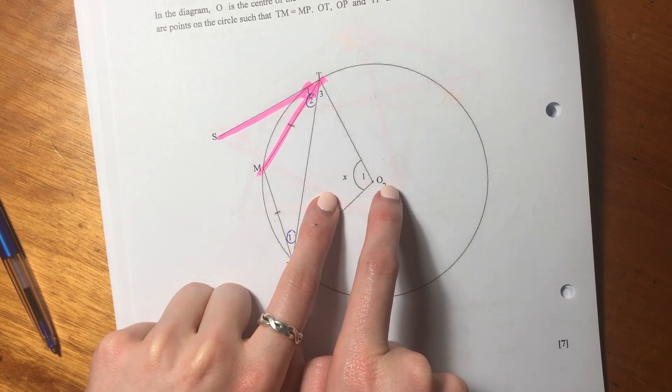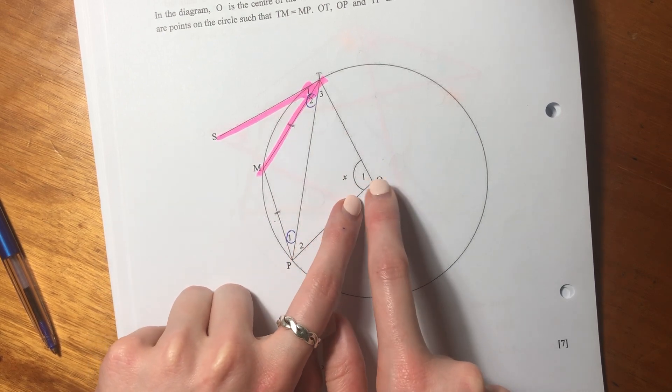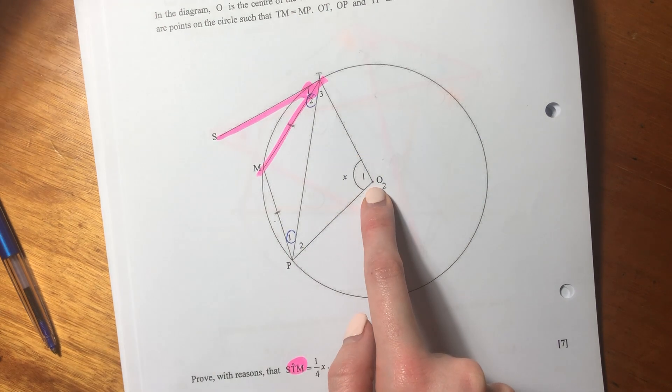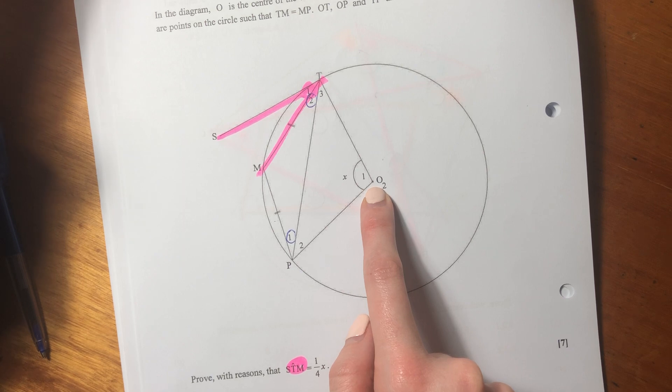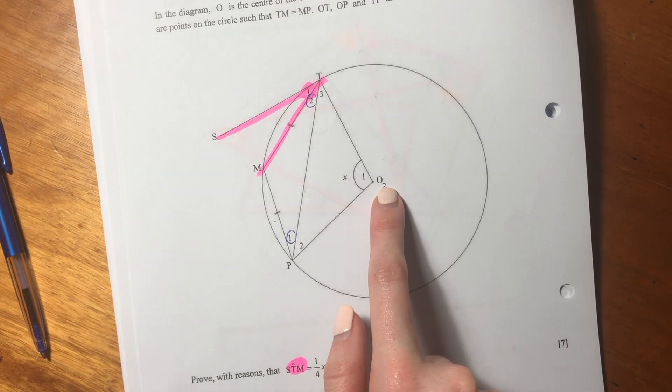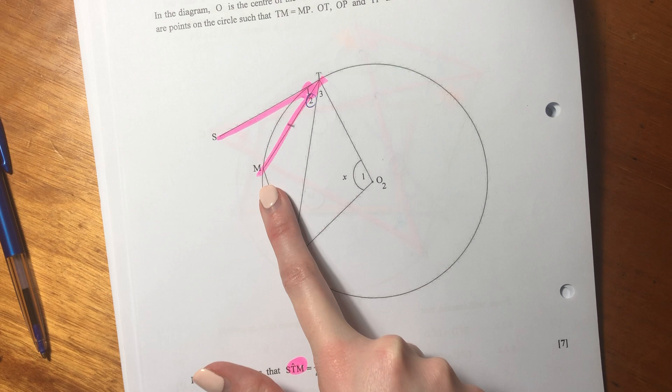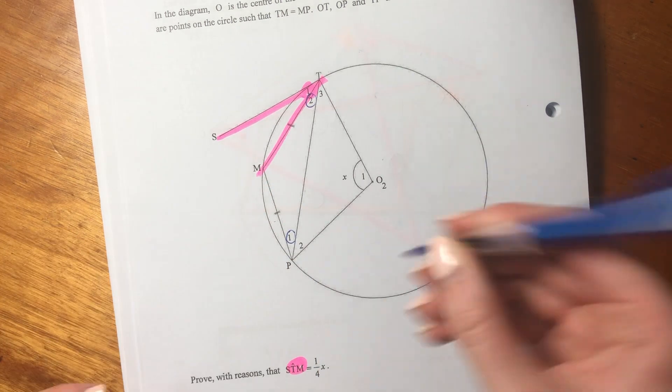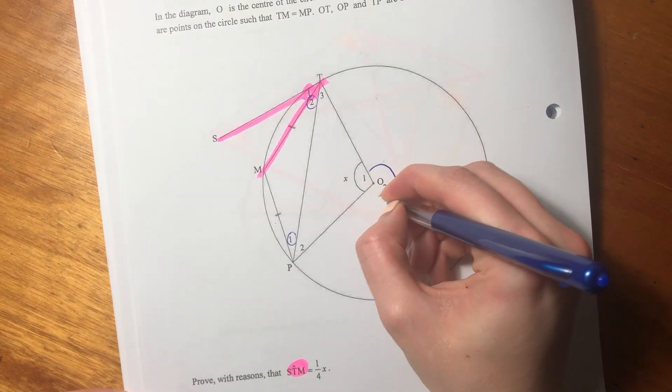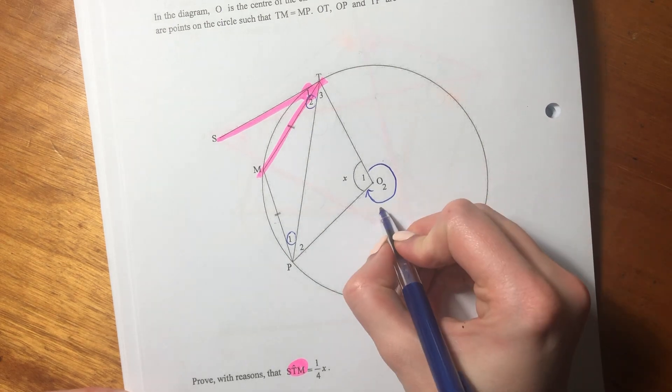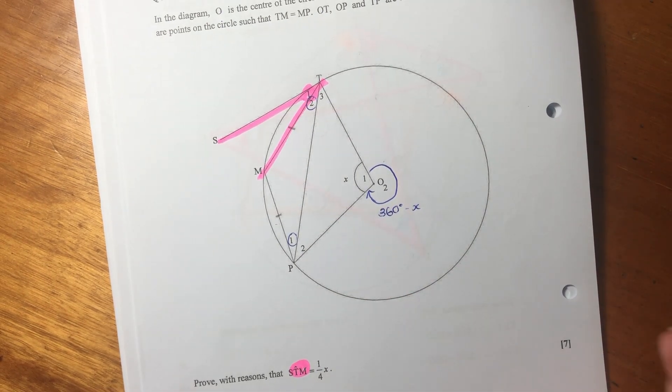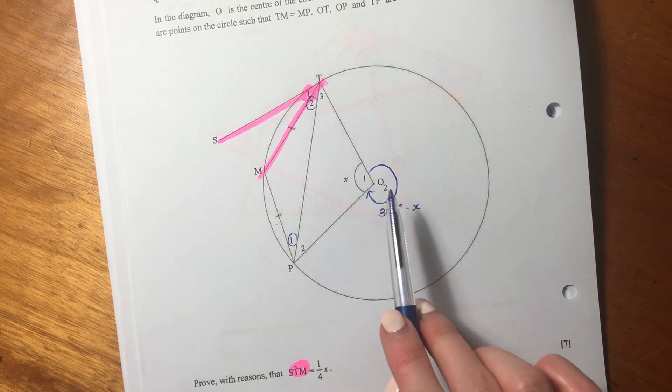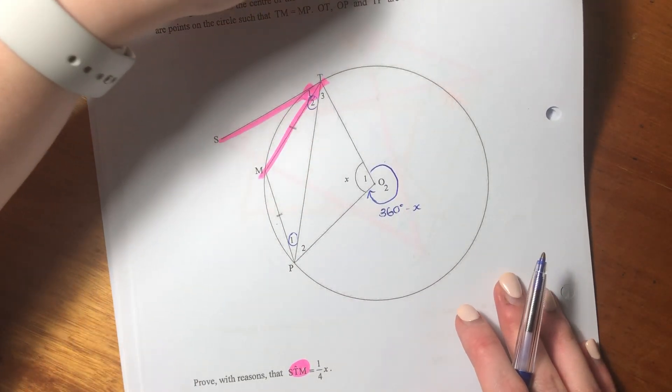So we want to kind of get from X over here all the way to there. We can use that rule which says that the angle at the center is two times the angle at the circumference. So let's just label this angle here. This angle here is going to be 360 minus X. And that's just angles around a point. So let's start writing this down.